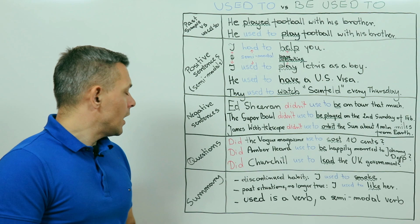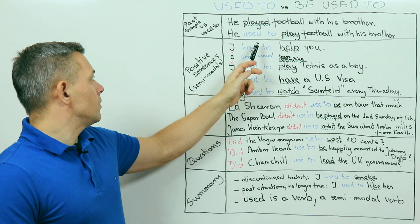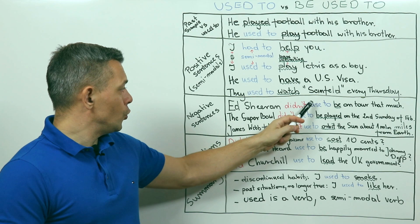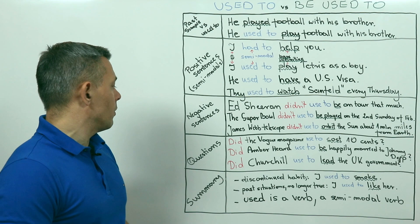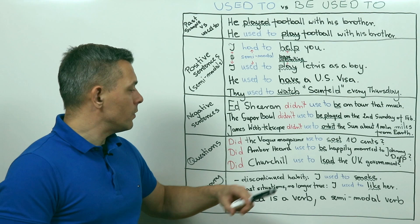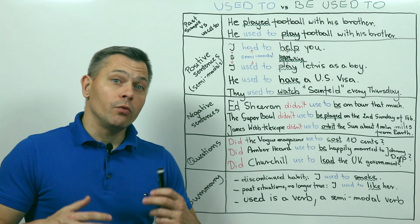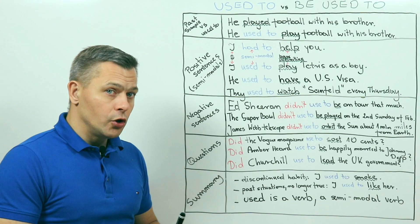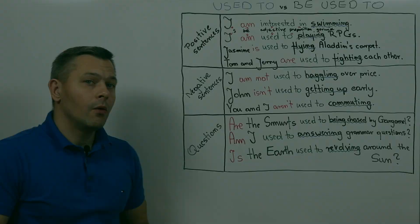Positive sentences: subject, semi-modal used to, bare infinitive. In negatives: auxiliary didn't, used to, no D here, and another verb in its bare infinitive form. In questions: did before the subject, again used to with no D, and another verb in its bare infinitive form. And remember, in this structure, so in the used to structure, used is a verb. Why is it so important?